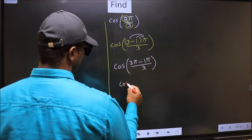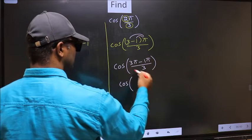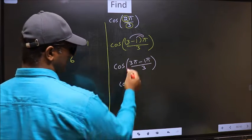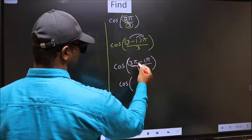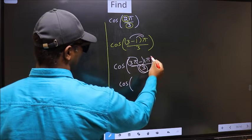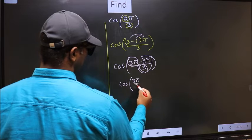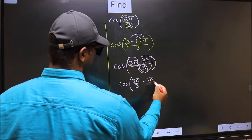Now cos, in this you should split the denominator in this way. That is 3π by 3 minus 1π by 3.